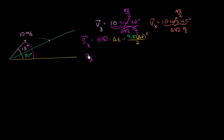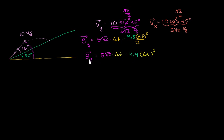Simplifying, our vertical displacement equals 5√2·Δt minus 4.9·Δt². This gives us our displacement in the y direction as a function of time. Our horizontal displacement as a function of time is simply the horizontal velocity times time: Δx = 5√2·Δt.